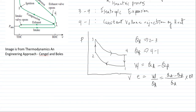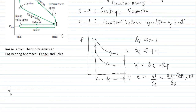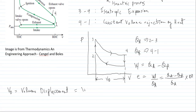Another important quantity is the volume from V1 to V2, which is called the volume displacement, V_D. Volume displacement is equal to V1 minus V2.